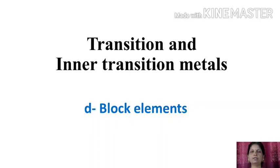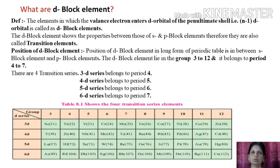First, we will discuss the d-block elements that are also called transition elements. The elements in which the valence electron enters the d-orbital of the penultimate shell (n-1 d-orbital) are called d-block elements. The d-block elements show properties between those of s and p-block elements, therefore they are also called transition elements.